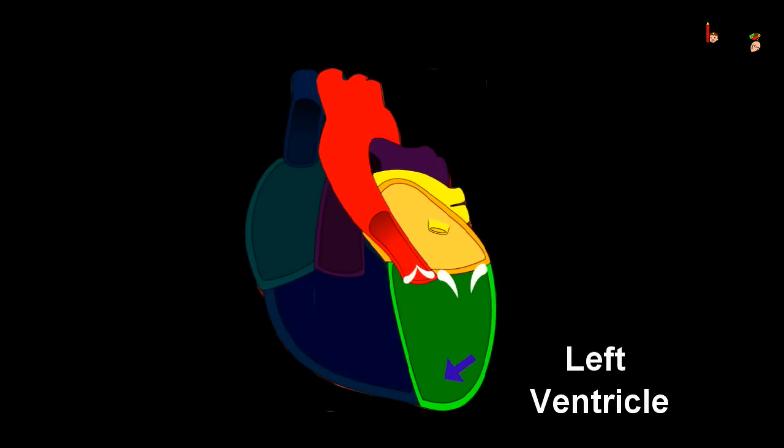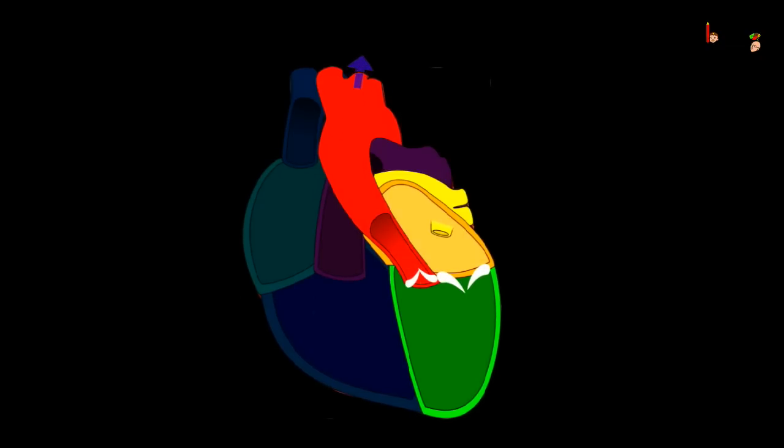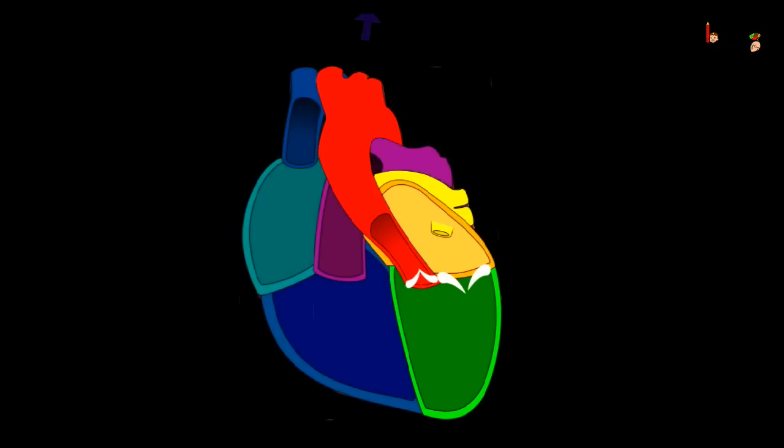Then the left ventricle pumps the oxygenated blood into an artery called aorta. Many arteries come out of aorta like branches. These arteries then carry the oxygenated blood to different parts of the body.